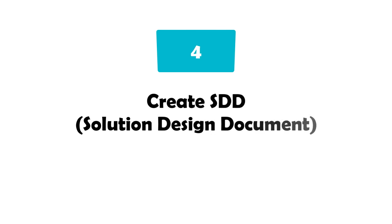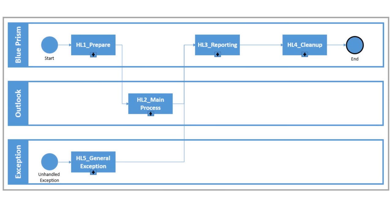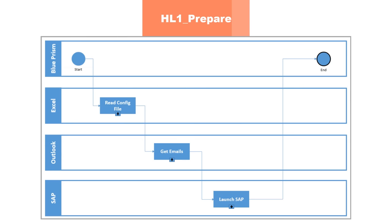The fourth task for a business analyst is to create the SDD, Solution Design Document. The SDD is a document where the diagram of the process is drawn showing how the process should look. This includes the inputs and outputs for each process step, making it easier for the developer to implement the process later. In this diagram you can see the whole process, which contains five high levels: prepare, main process, reporting, cleanup, and general exception for unhandled exceptions. In this second diagram you can see, as an example, the first high level which contains all steps like read config file, get emails from Outlook, and launch SAP.